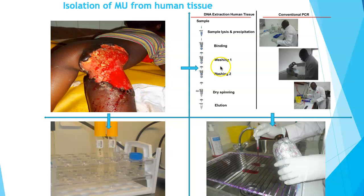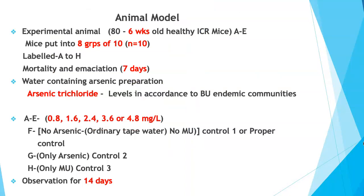Samples were sent to the lab for DNA isolation and amplification, confirming the presence of Mycobacterium ulcerans. Microscopy using the Ziehl-Neelsen stain also confirmed M. ulcerans. The bacteria were grown on Löwenstein-Jensen media for 12 weeks. For the animal study, 80 healthy ICR mice (invading control region mice) aged six weeks were used. They were placed in eight groups of ten, labeled A to H, and monitored for signs of mortality and emaciation.